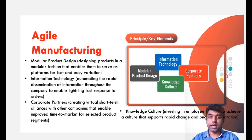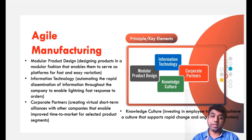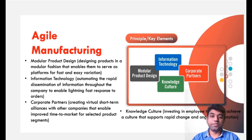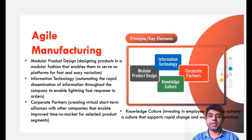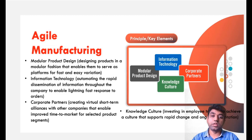Let me give you one example. Zomato is doing partnership with multiple restaurants. The reason is that the requirements of different customers are different and they have a requirement for different foods, so all of them get served. The same fundamental applies here — the need of the customer is different. You go for the partnership, you go for corporate partners, so that you can satisfy the different needs of the customer.